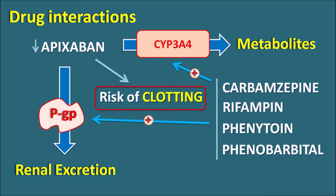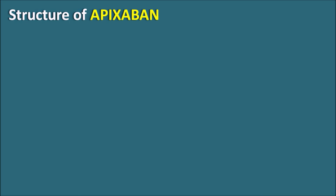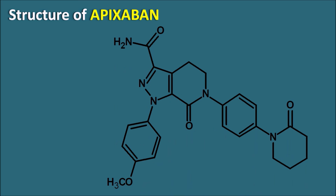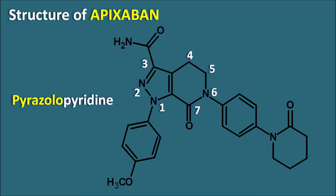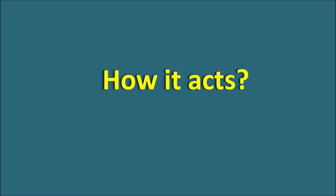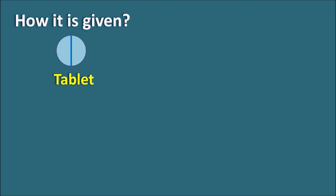Looking at the structure of apixaban, it has a fused heterocyclic ring system. Numbering the rings — positions one through seven — a pyrazole ring is fused with a pyridine ring system, so apixaban has a pyrazolo-pyridine ring system. This drug is given in tablet form, available at 2.5 mg and 5 mg. The initial dose is 5 mg twice daily.